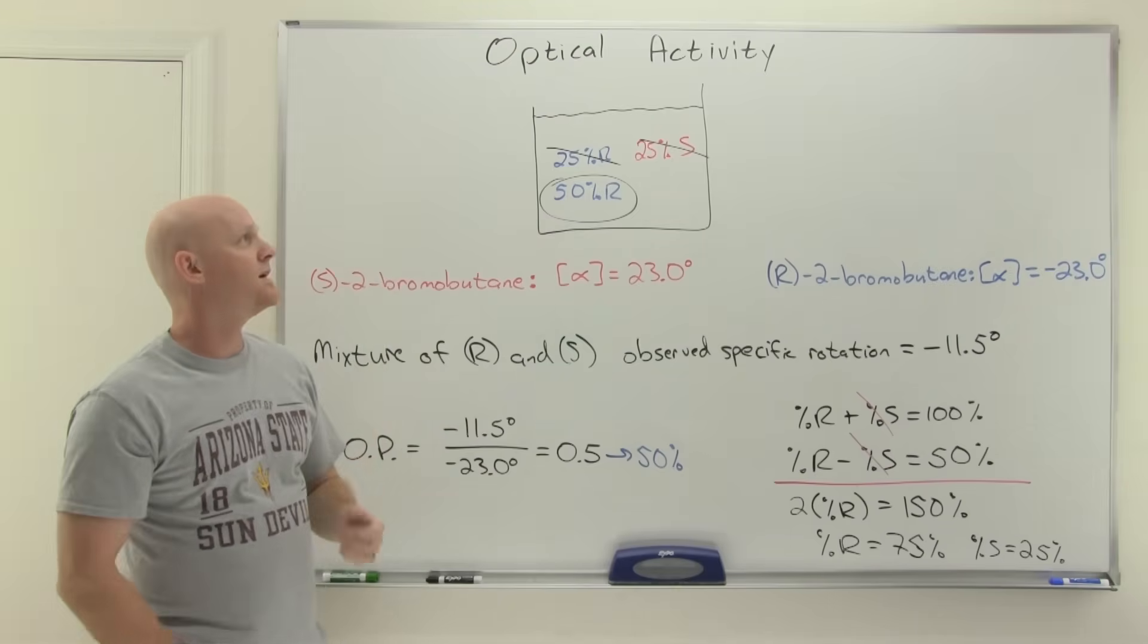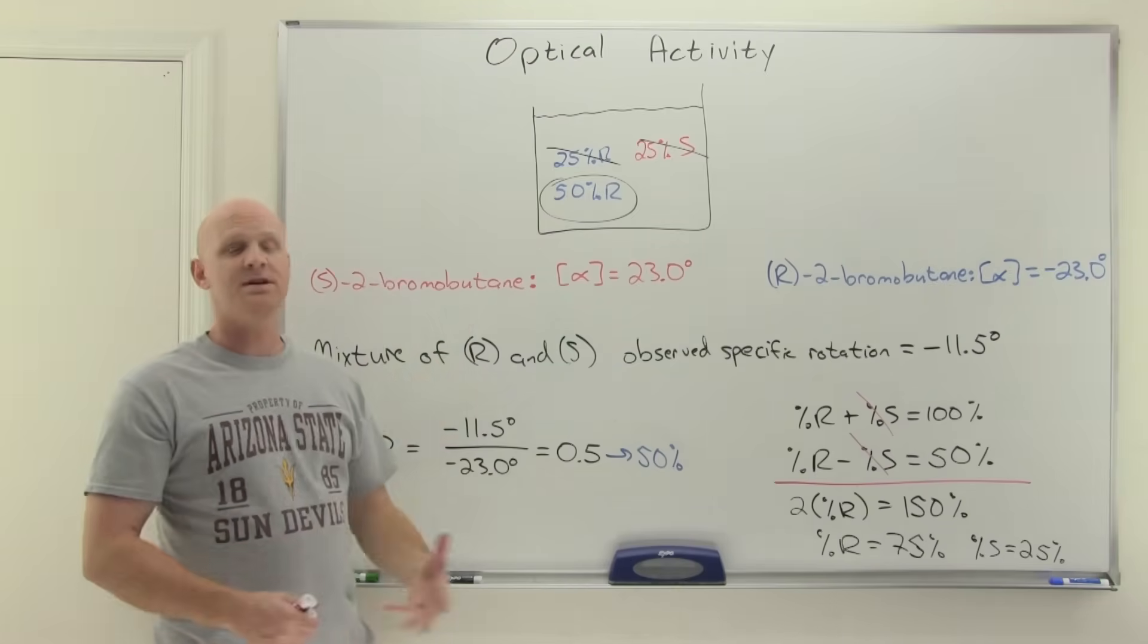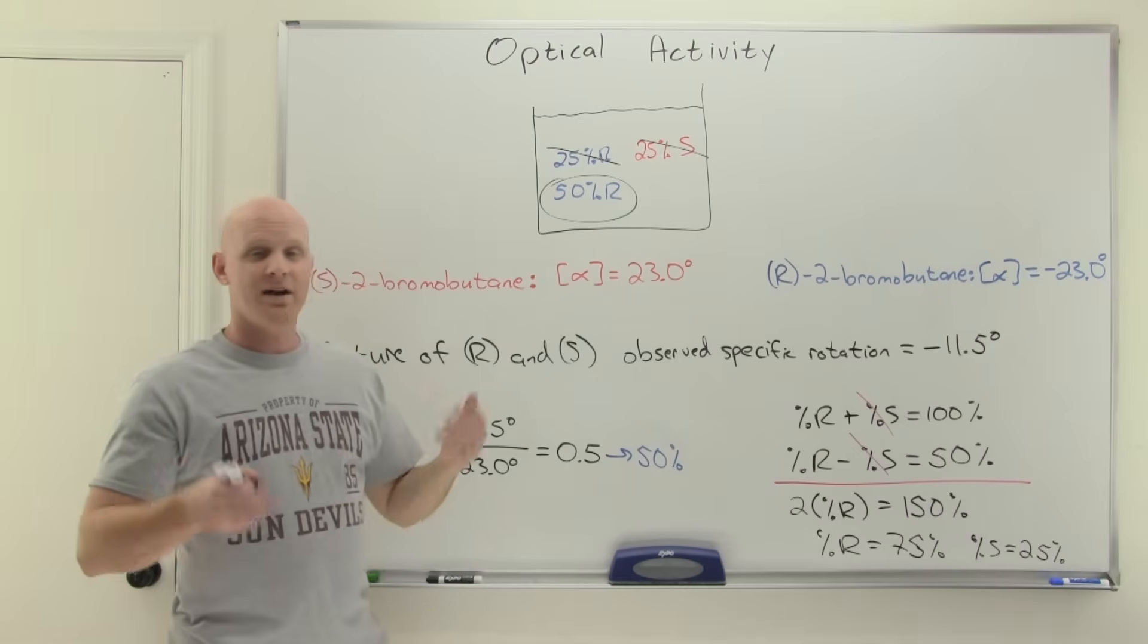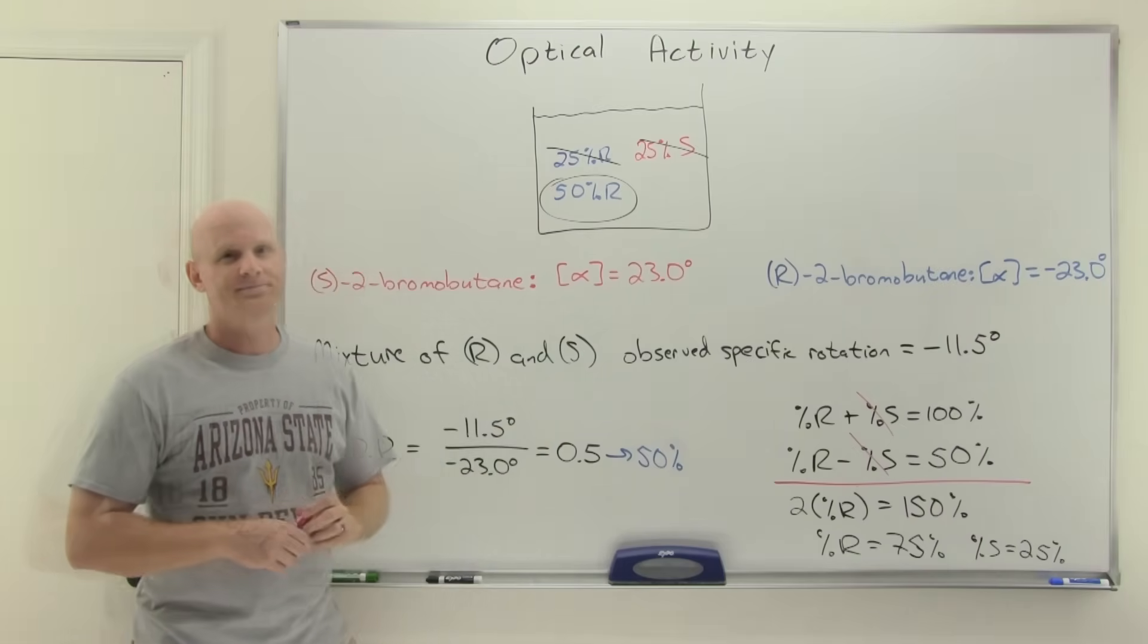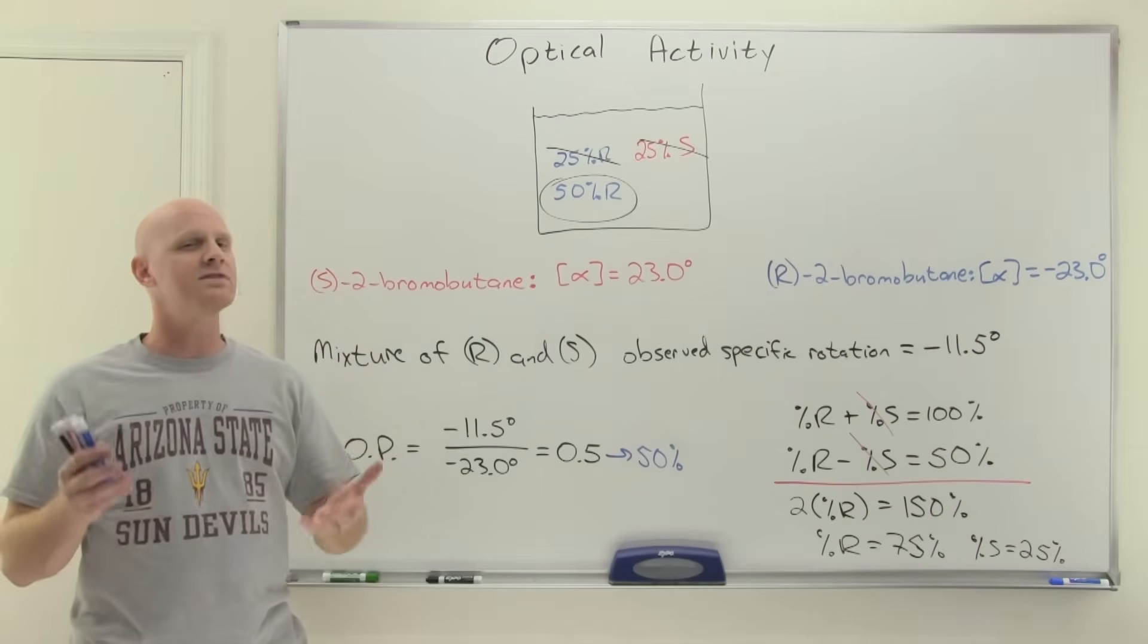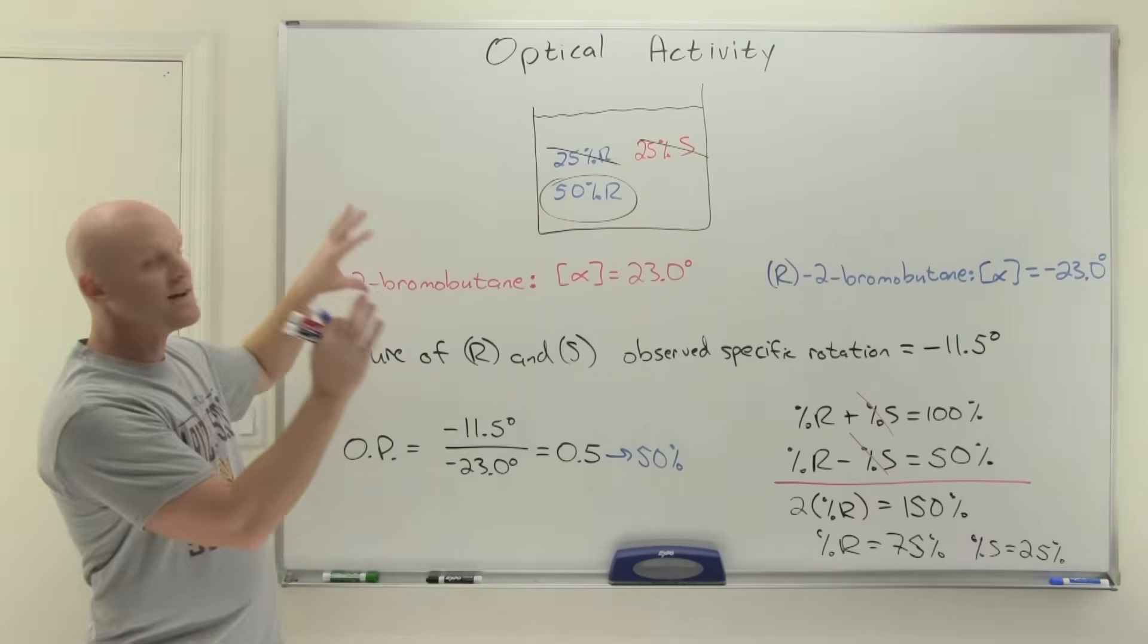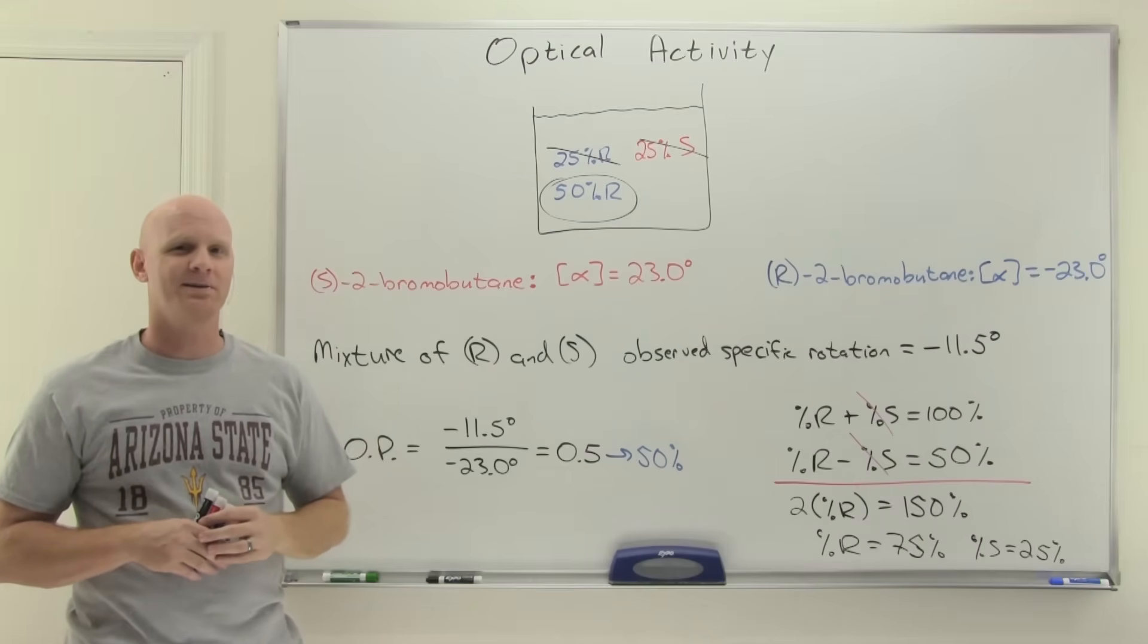So sometimes we'll give you the optical purity and have you figure out what the rotation is going to be. Sometimes we'll give you that observed specific rotation and have you go back and figure out what the optical purity and enantiomeric excess would be instead. But once again, that optical purity and enantiomeric excess are always equal to each other. Now, if you benefited from this lesson, consider giving me a like and a share, one of the best things you can do to support the channel. And if you've got questions, feel free to leave them in the comment section below. If you're looking for the study guides that go with this lesson or if you're looking for practice problems, check out my premium course on chadsprep.com.